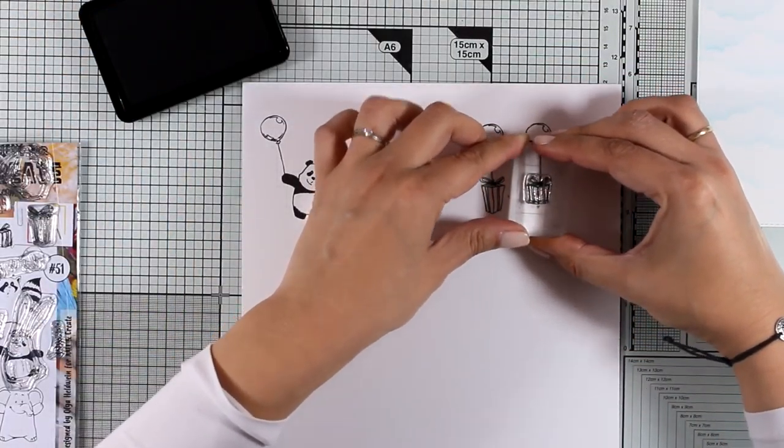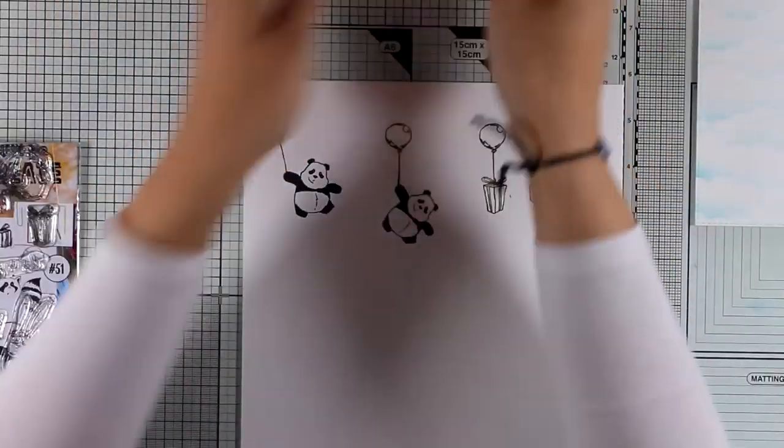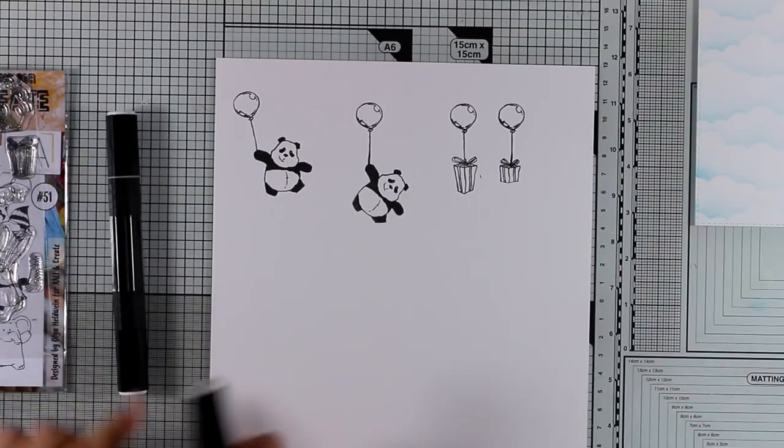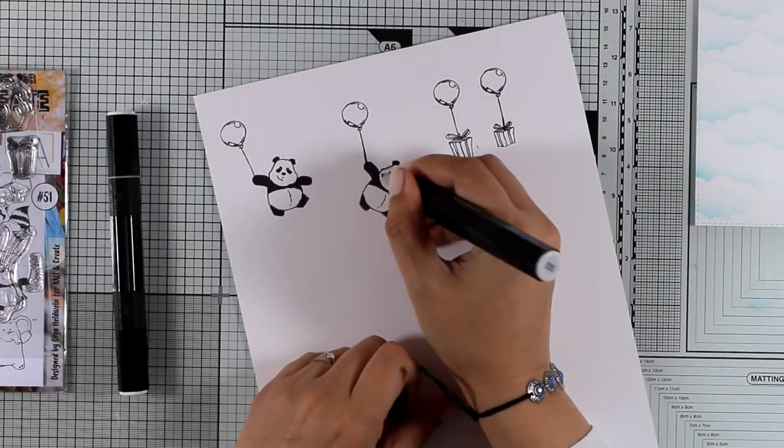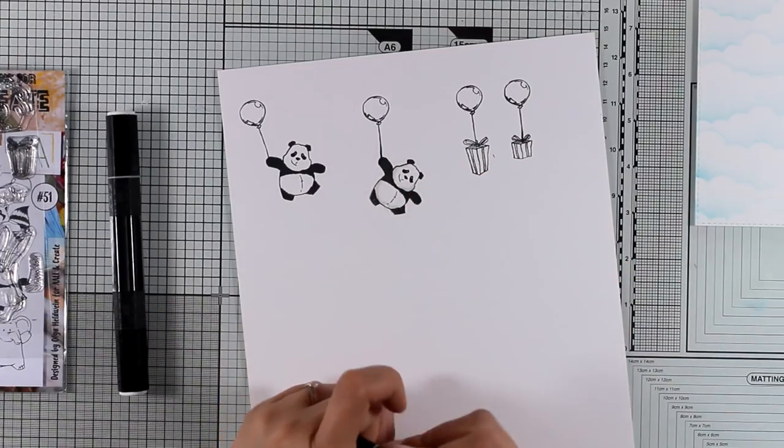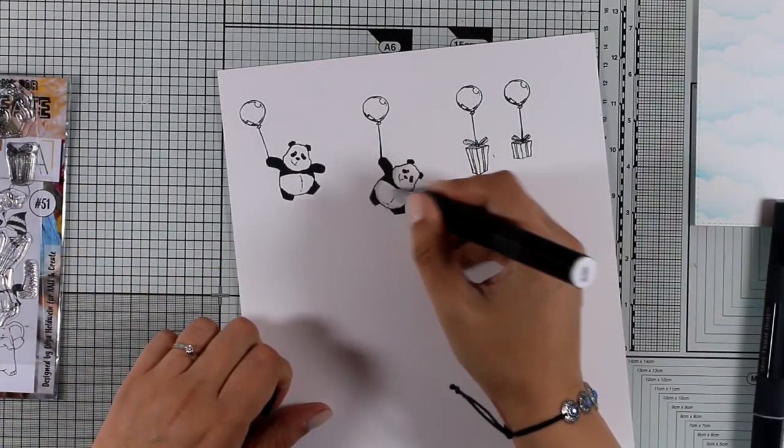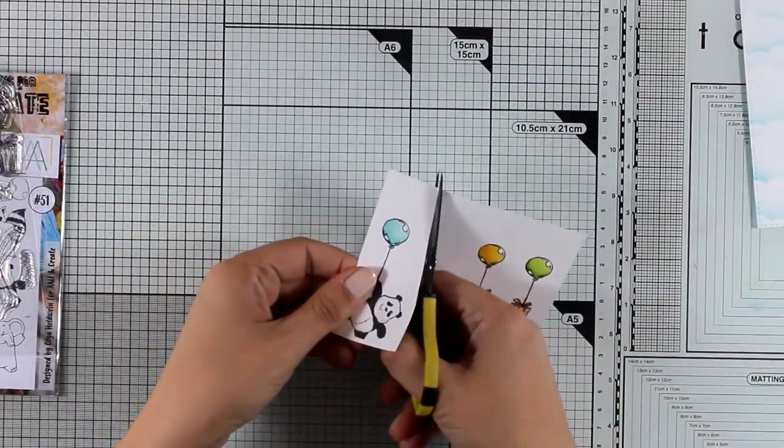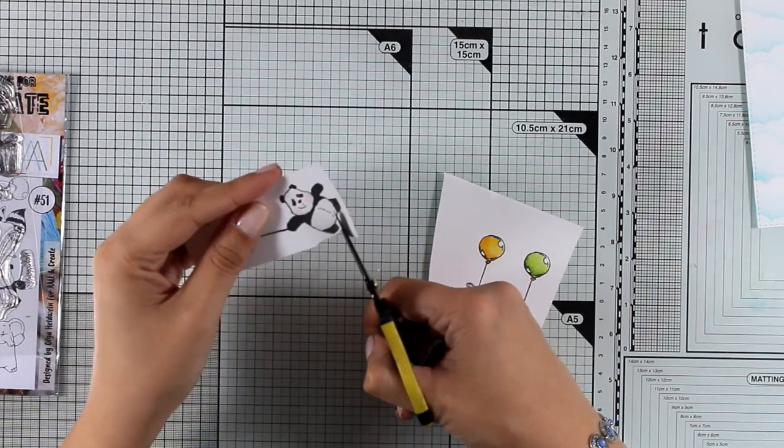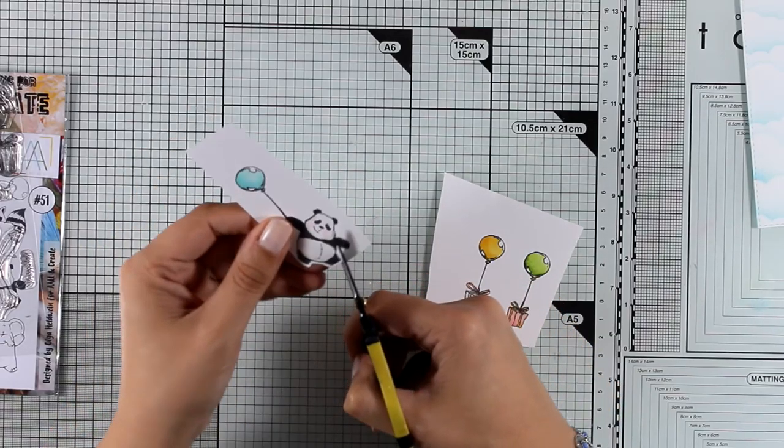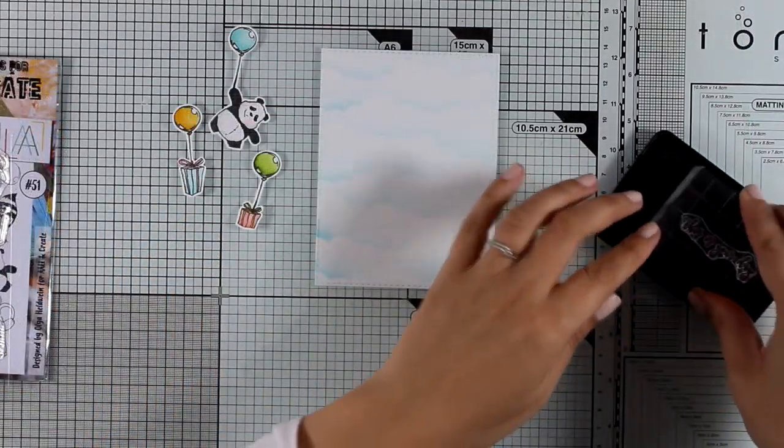Now I finished with the stamping and I have all the elements that I'm going to need for creating my little sky scene here. I'm going to use my alcohol markers to color everything - the balloons, the gifts - and I'm also going to add a touch of gray shadow on my panda. I'm also going to give him some pink cheeks. He is very easy to color, you don't really need to do anything. And once I finish with the coloring I will go ahead and use my scissors to cut out all the images. Of course I'm going to make my life easy and cut out everything leaving a white border.